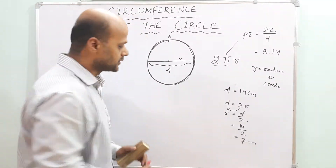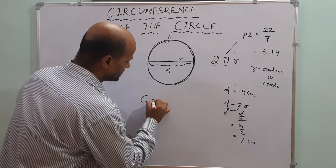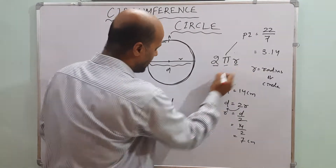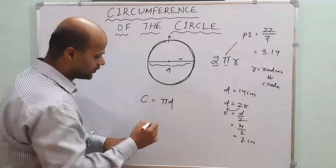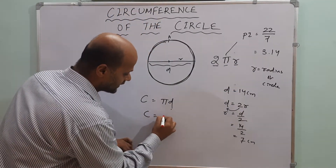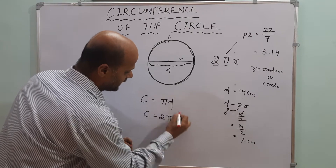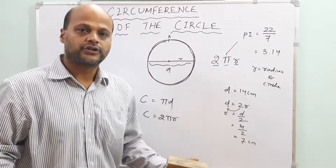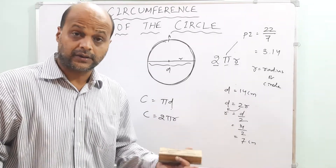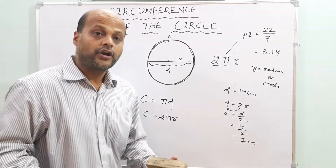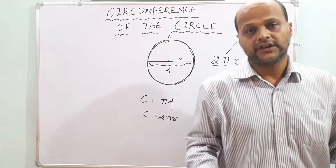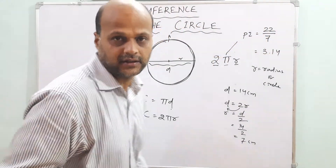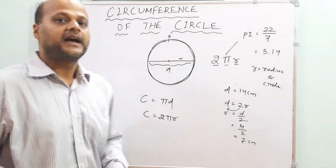With the diameter, we can also find the circumference of the circle directly. The circumference of the circle equals pi times d, because two times r is the diameter. So if the diameter is given, you can directly find the circumference using C = πd, or if radius is given, use C = 2πr.